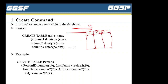After the table name, inside brackets, write the first column name, then the data type and size of that column, then a comma. Then the second column name, data type, size, comma. Then the third column name, data type, size — and so on, up to n number of columns. Close the bracket and end with a semicolon.